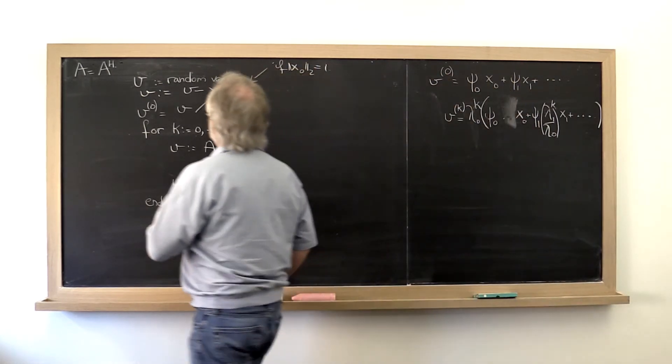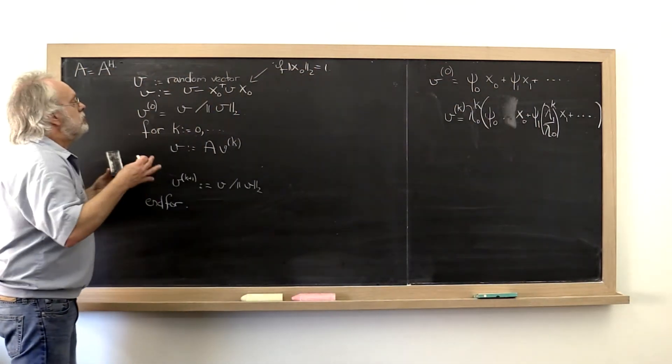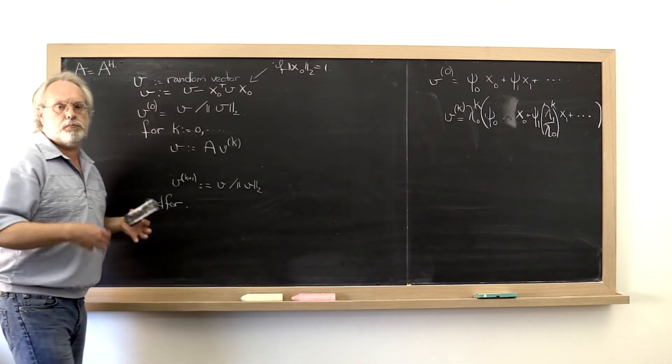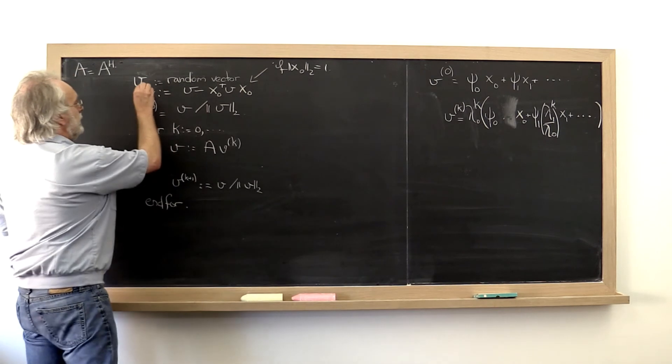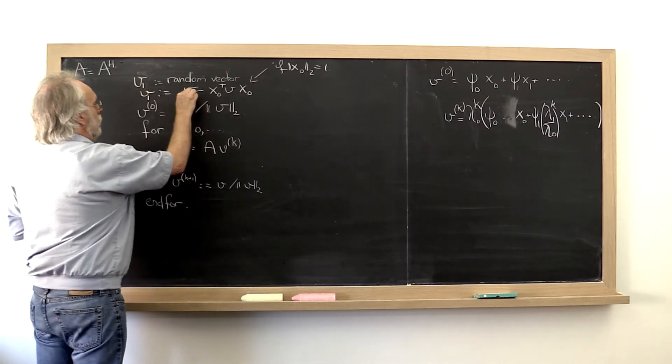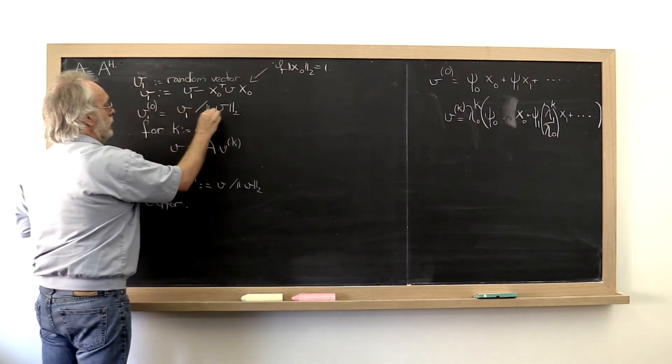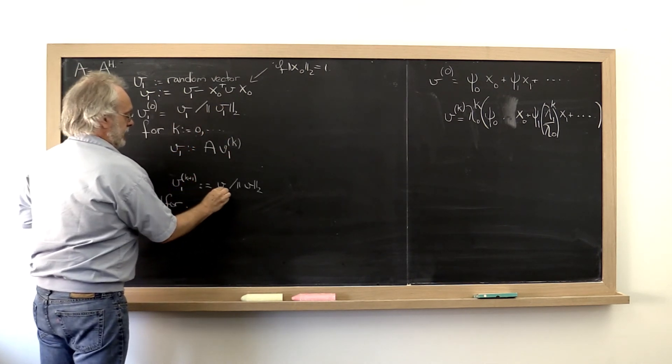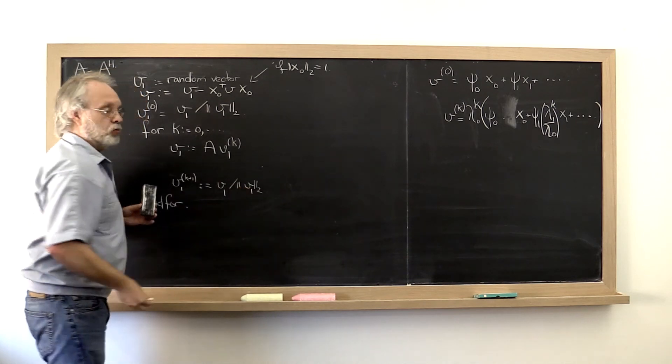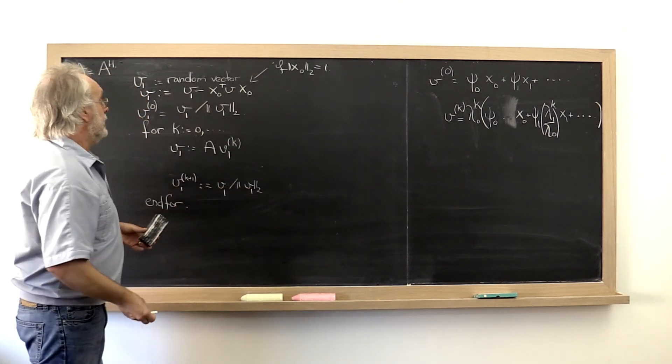And then we can sort of say, well, let's just so as not to get confused by which vector we're trying to home in on, let's give this subscript 1. And that then reminds us of the fact that we're trying to go after x1.